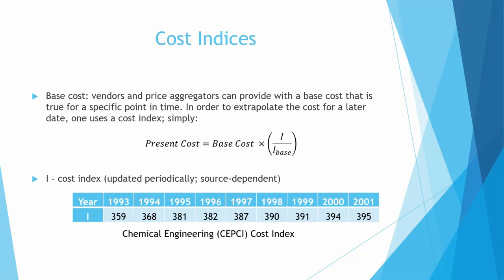A cost index is periodically updated. The most commonly used one is the CEPCI, which is the chemical engineering cost index. To get the present cost based on a base cost, you simply use the ratio of the index values for the years you're interested in. For example, to find the cost of a centrifuge in 1999 when you called in 1995, you multiply the known cost by 391 divided by 381. That gives you the present cost — an extrapolation of sorts.